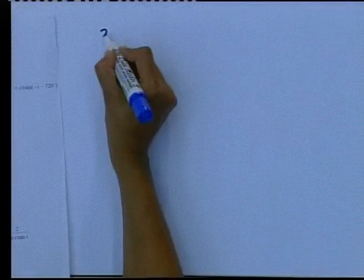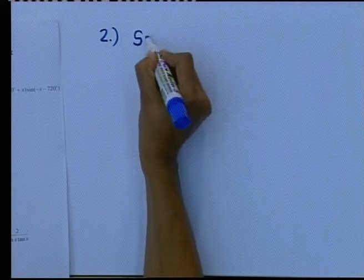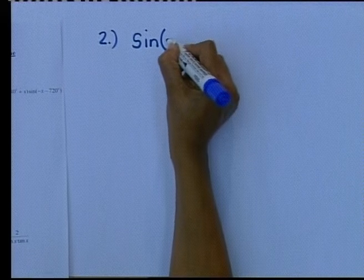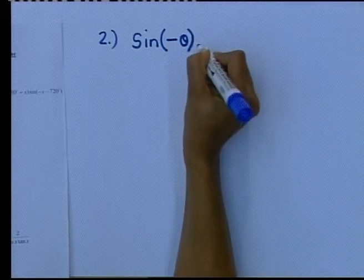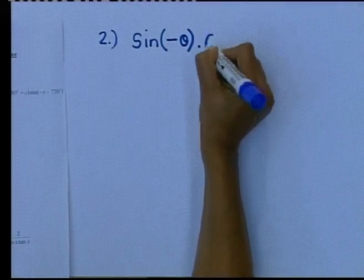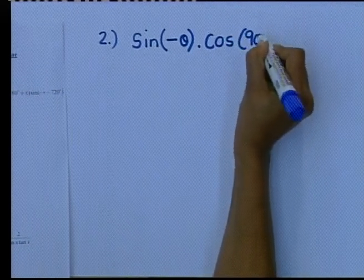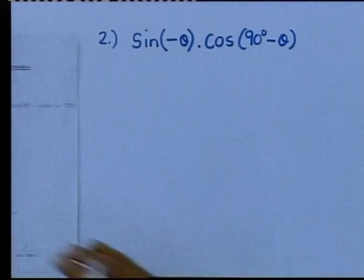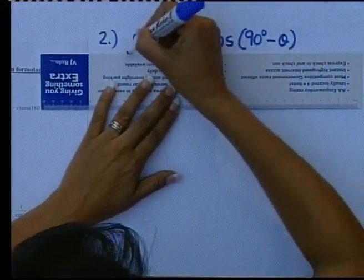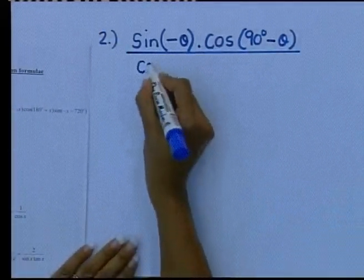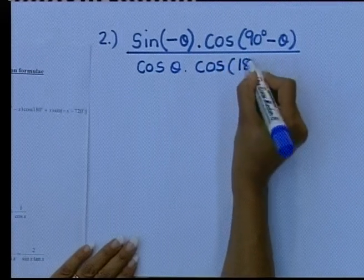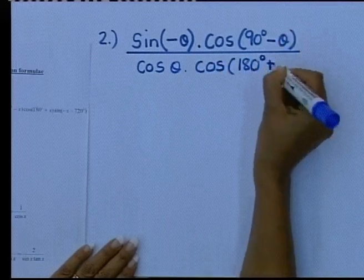I have a fraction sum here, number two. It says: sin of negative theta, multiplied by cos of 90 degrees minus theta, divided by cos of theta, multiplied by cos of 180 degrees plus theta. Write it down at the same time I write it down.